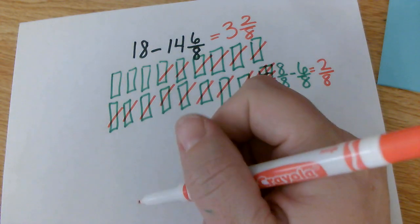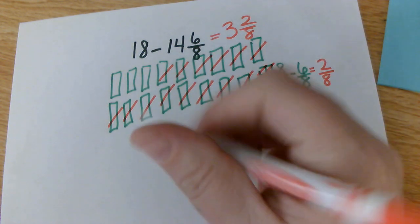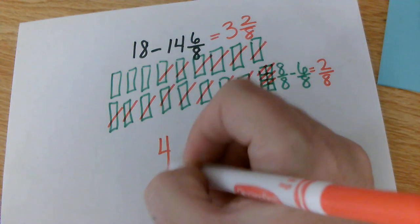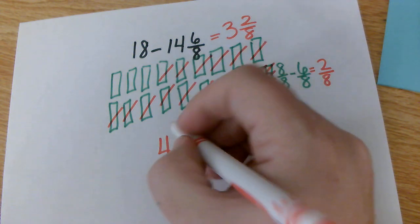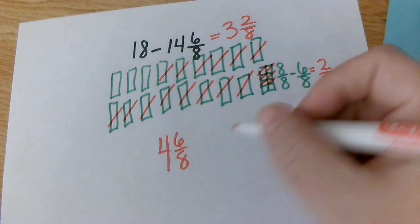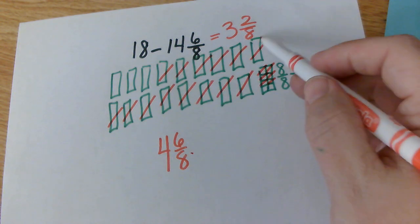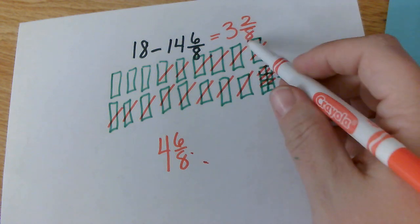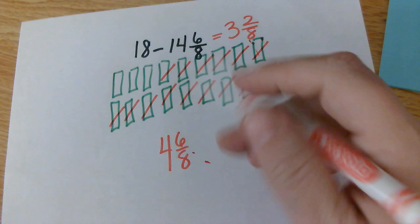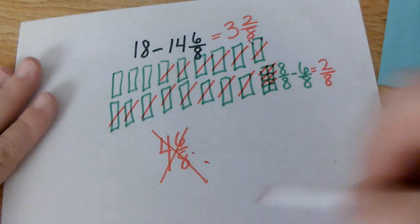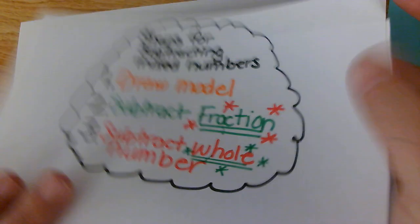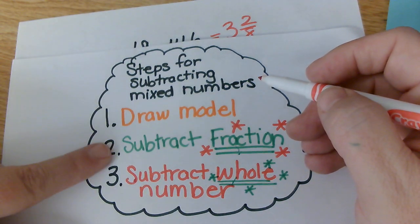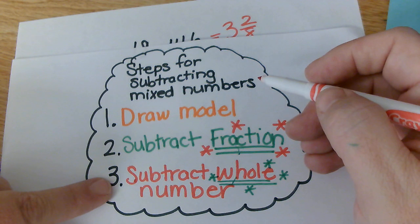Now I'm going to show you how most students would make a mistake. They're going to say 18 minus 14 is 4, and then say they can't subtract the fraction, so the answer must be 4 and 6 eighths. But is that the same as 3 and 2 eighths? No, it's not. 4 and 6 eighths is not the same as 3 and 2 eighths. So remember your steps: draw your model, subtract your fraction, and then subtract the whole number.